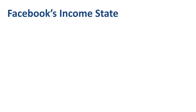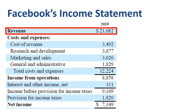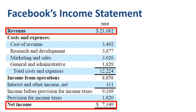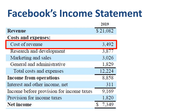Facebook's income statement shows net sales of $21 billion at the top and net income of $7 billion at the bottom. This is the company that does not have Cost of Goods Sold in its income statement. Facebook's revenue is driven by advertising, and its cost of revenue is in running its virtual platforms.